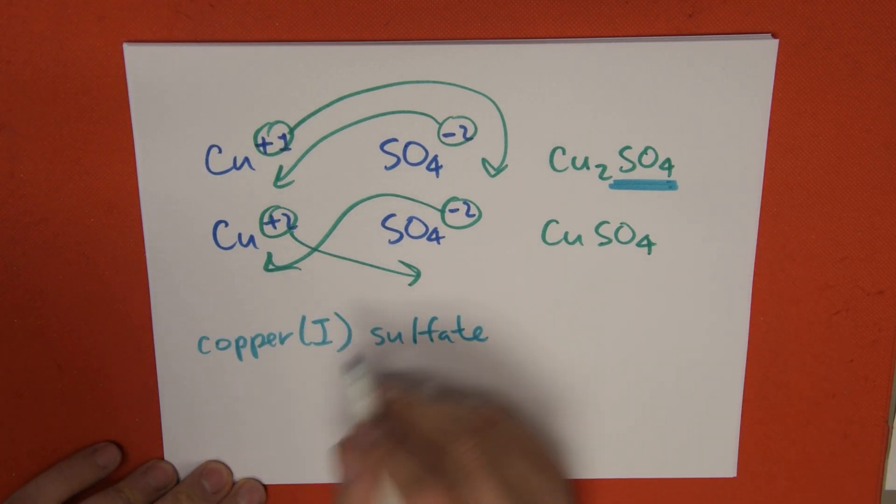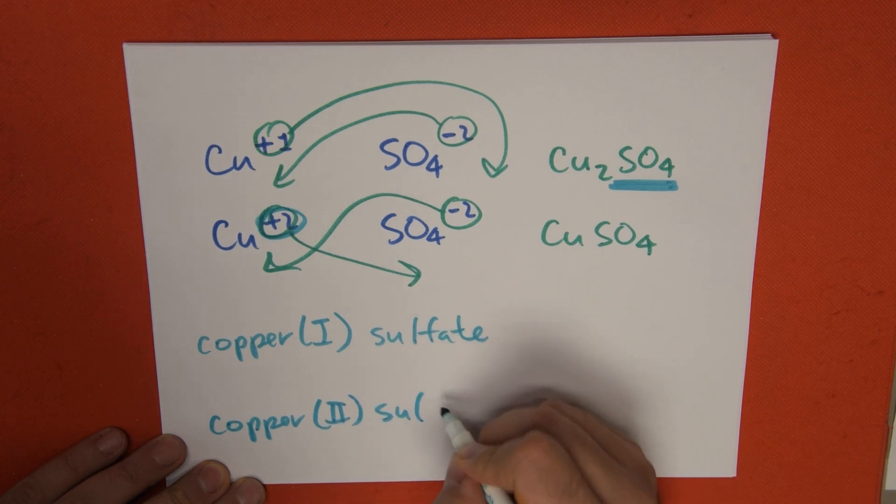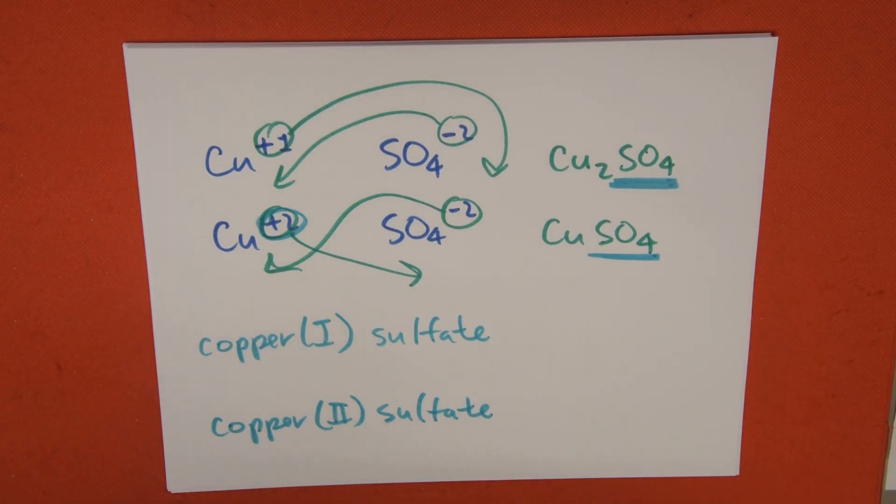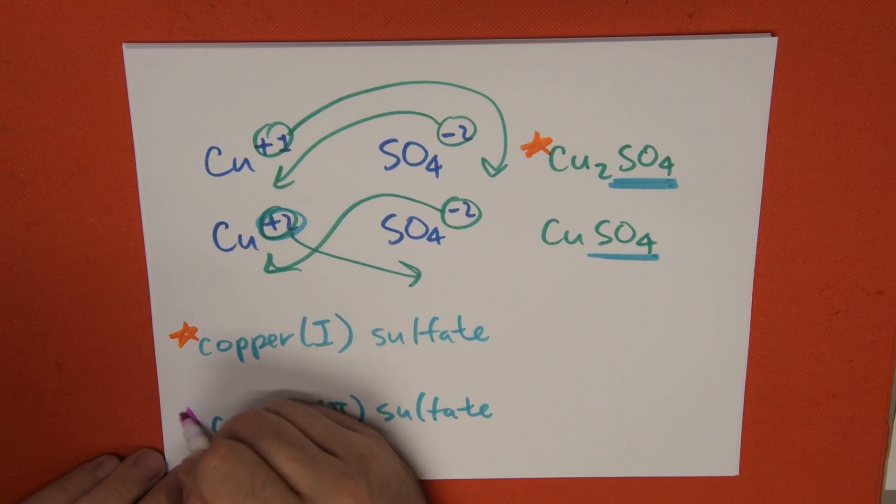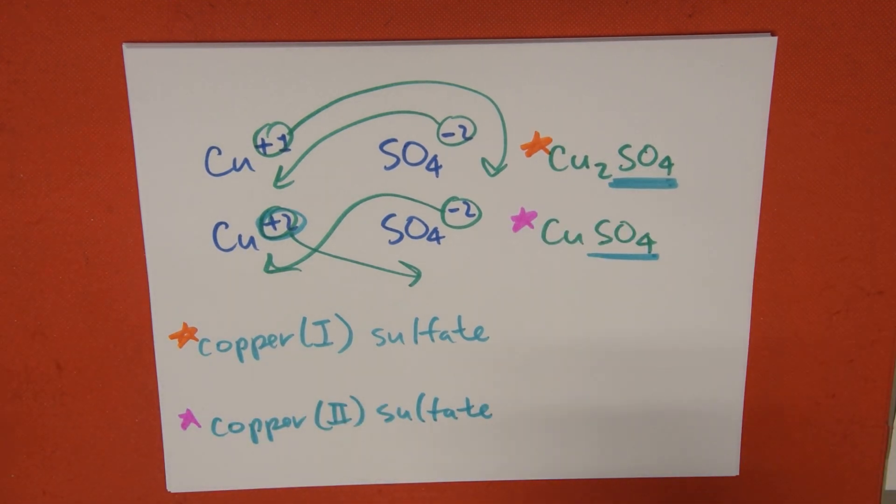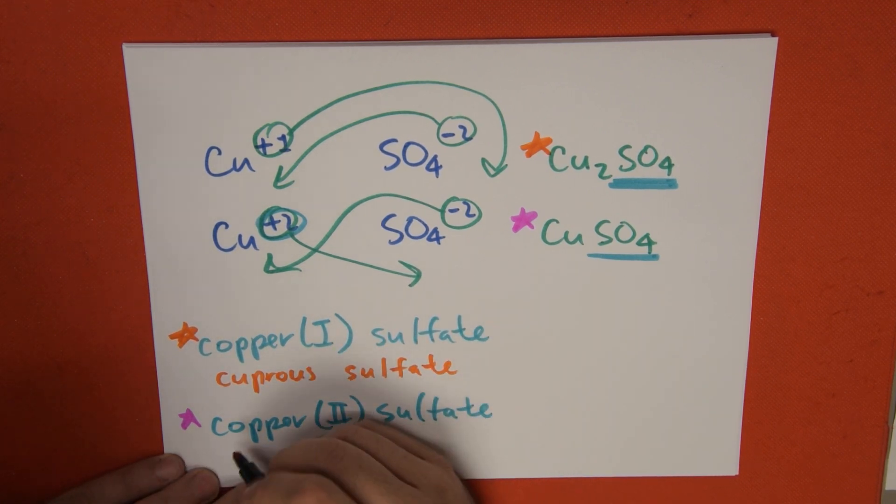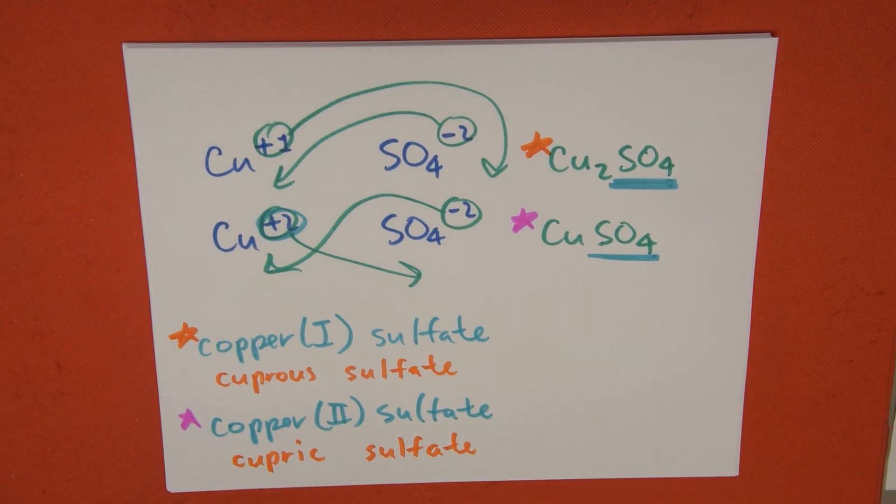And with the second one, copper, the valence that we use is 2 or plus 2, copper 2 sulfate. That's it for the modern name. This one is this one, and copper 2 is this one. Remember, for the classic name, we can always substitute the lower valence, which is copper 1, for the word cuprous. So this would also be cuprous sulfate, and the name of the higher valence is going to turn into cupric sulfate.